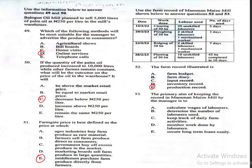Question 53: The primary aim of keeping the record in Mama May's farm by the manager is to A, calculate wages of labourers; B, determine the number of labourers used; C, keep track of daily farm activities; D, monitor work done by labourers; E, secure long-term loans easily. The correct answer is option D, monitor work done by labourers.